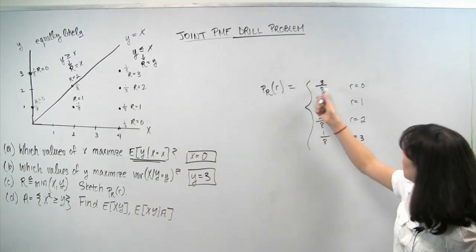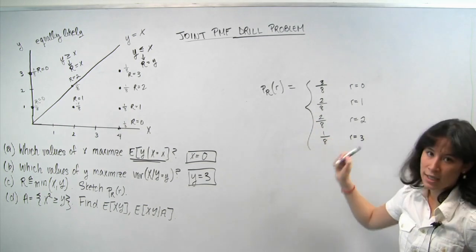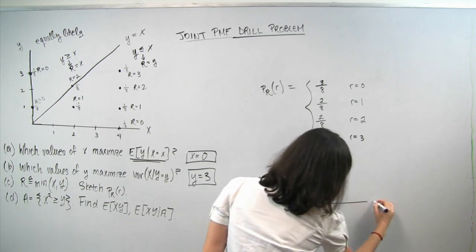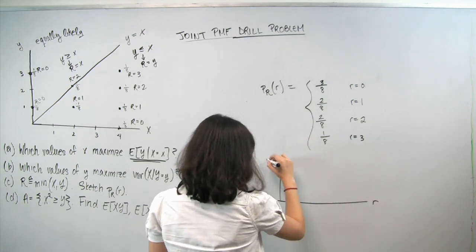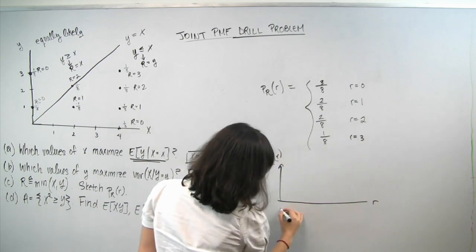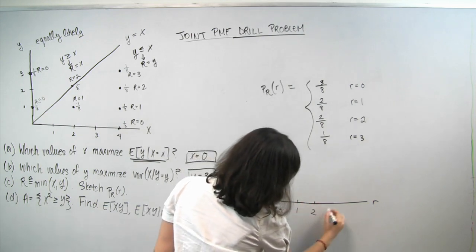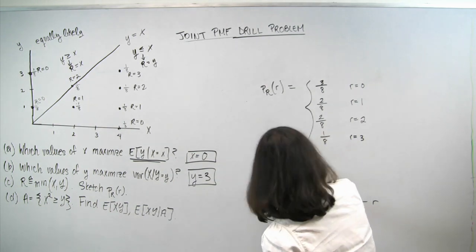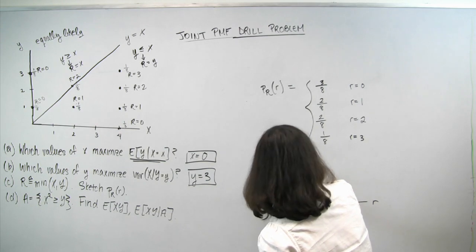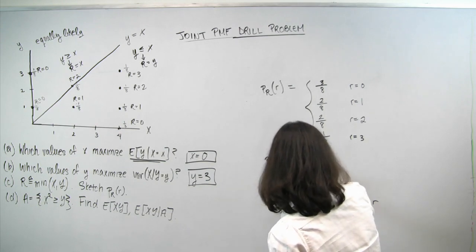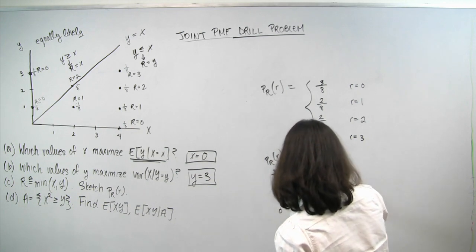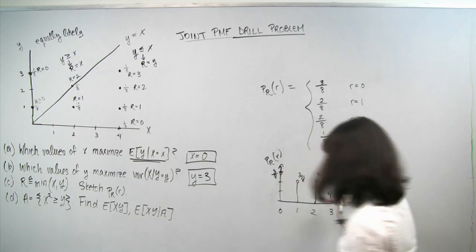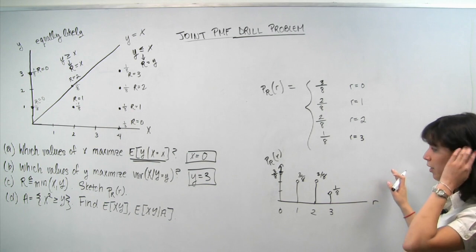Quick sanity check: 3+2+2+1=8, so our PMF sums to 1. To sketch the PMF, we plot p_R(r) with r on the x-axis (values 0, 1, 2, 3) and probabilities on the y-axis. At r=0 we have 3/8; at r=1 we have 2/8; at r=2 we have 2/8; at r=3 we have 1/8. This is our fully labeled sketch of p_R(r).